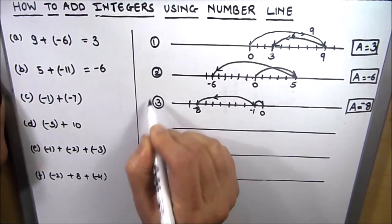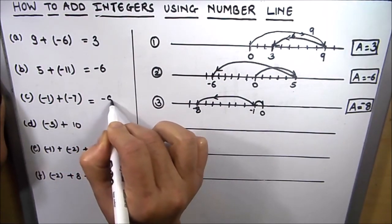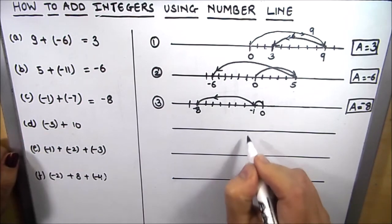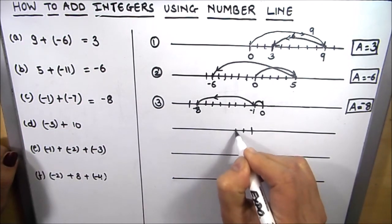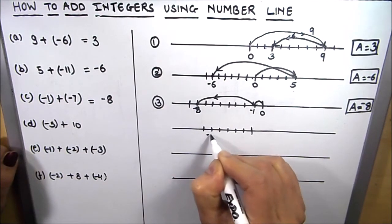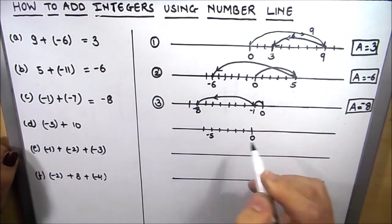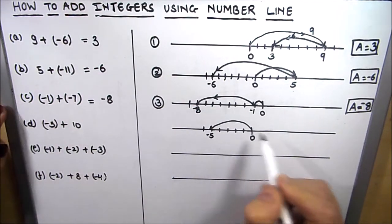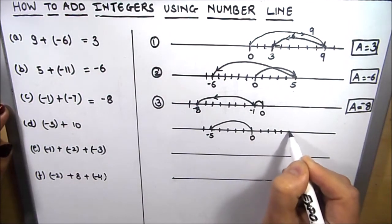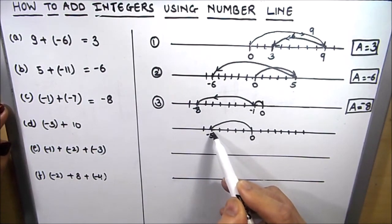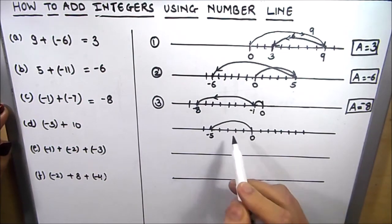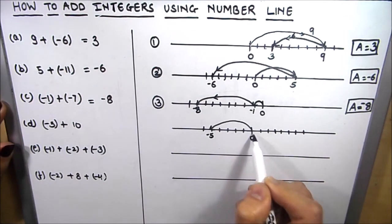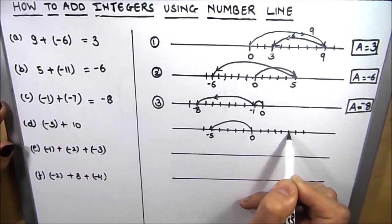Negative 7 and negative 1 gives us negative 8. The next one is negative 5. First we take minus 5 on the negative side of the number line — this is minus 5, this is 0. Then we have to add 10, so we move to the right-hand side (positive side): 1, 2, 3, 4, 5, 6, 7, 8, 9, 10.